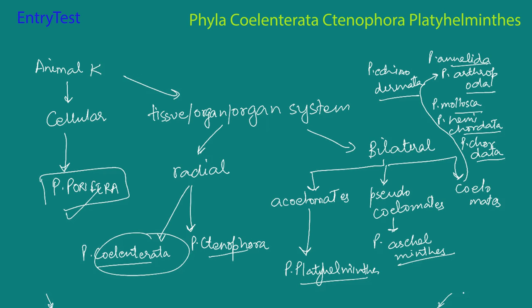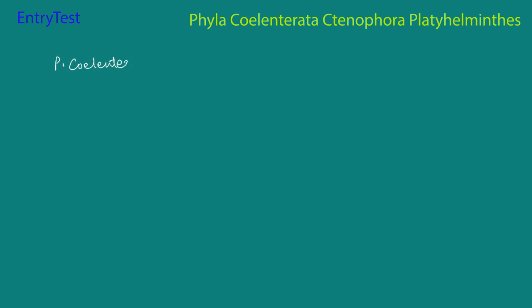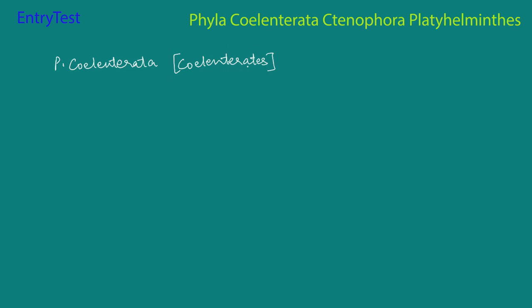So let's get started with the next phylum, which is Coelentrata. As the name suggests, members of this phylum are called coelentrates. They are also called cnidarians. They are usually marine — mostly marine — though very rarely they can be freshwater, but they are definitely aquatic. They can also be sessile or free swimming, and the most common member is the jellyfish. They have radial symmetry.